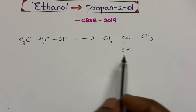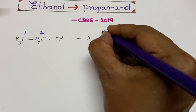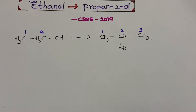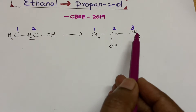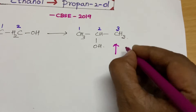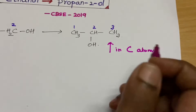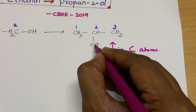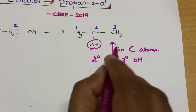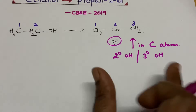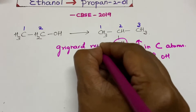So here you see there are two carbons in ethanol and three carbons in propan-2-ol. Remember: if there is an increase in the number of carbon atoms — say by one carbon — and the product is a secondary alcohol or tertiary alcohol, then immediately you have to think about the Grignard reaction.